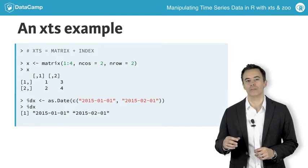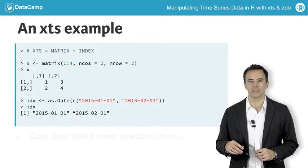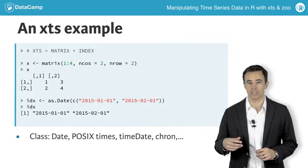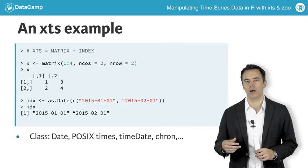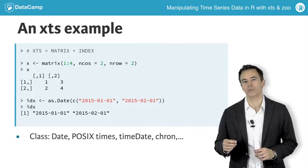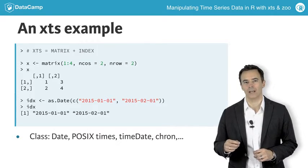XTS lets you use nearly any time class — be it of class date, POSIX times, timeDate, chron, and more — but they need to be time-based. Here we are using R's date objects.